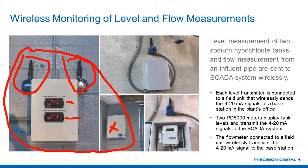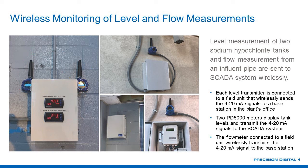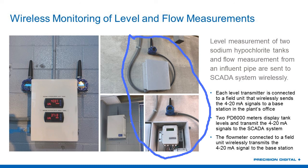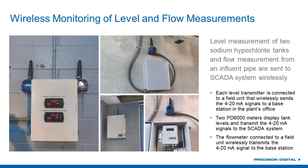And then the signal goes straight to the base station, which is back in the control room. The second application here is a flow application — the flow meter is connected wirelessly to our PDW-90 system, and that 4 to 20 milliamp then goes back to the control room. So just two applications — level and flow — where we see how we can use our PDW-90 wireless system to get signals from where they're at to where you need them to be.